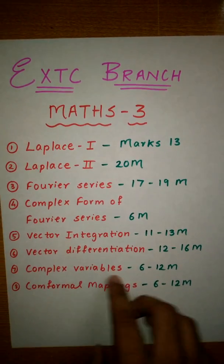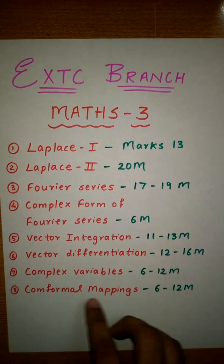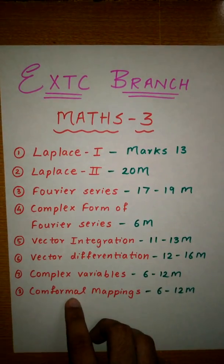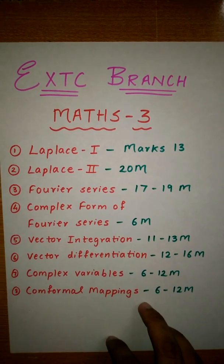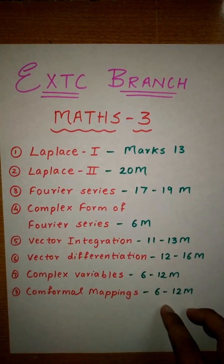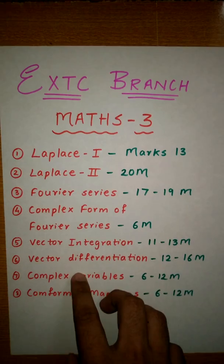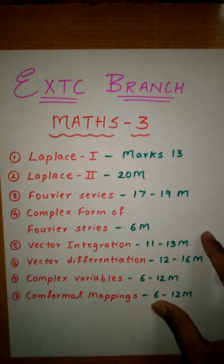Complex variables has 6 to 12 marks, and conformal mapping has 6 to 12 marks. Conformal mapping is an easy chapter where you can easily score marks. The rest can be considered as options, but you can prepare those also according to the weightage.